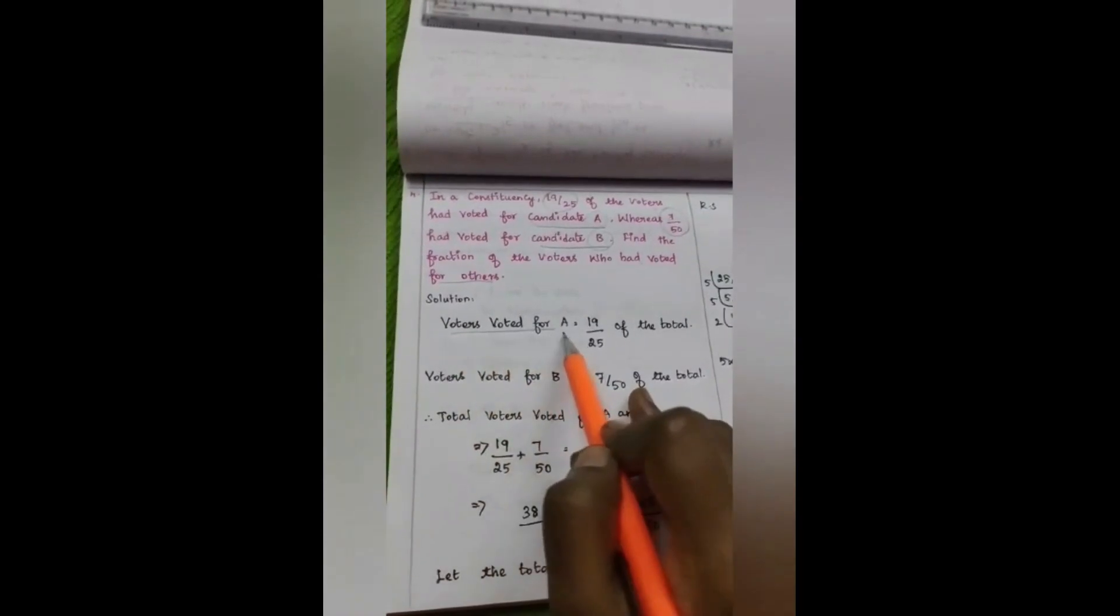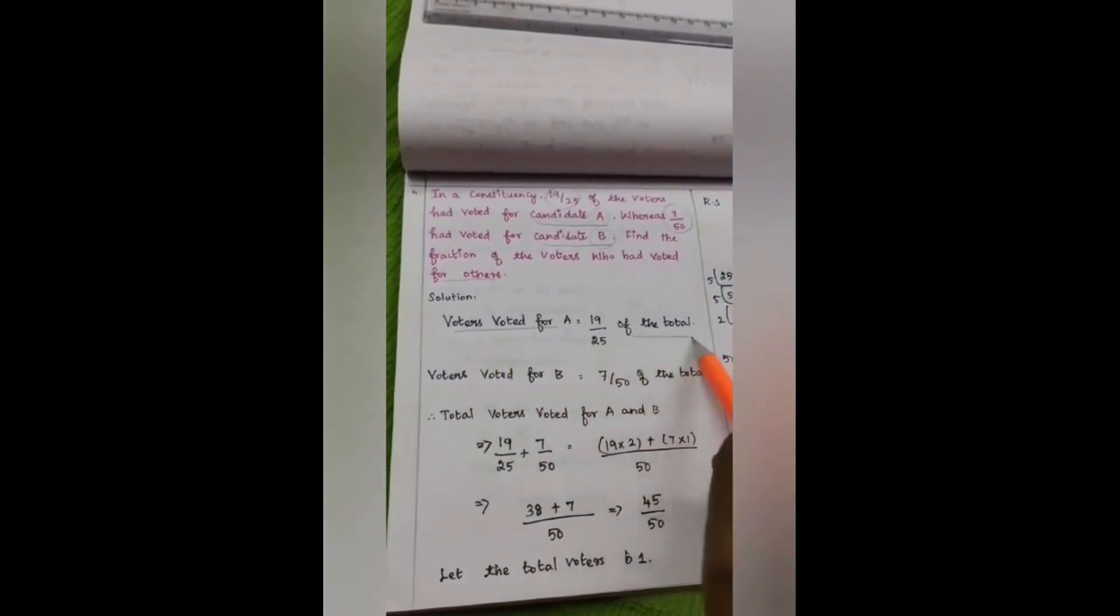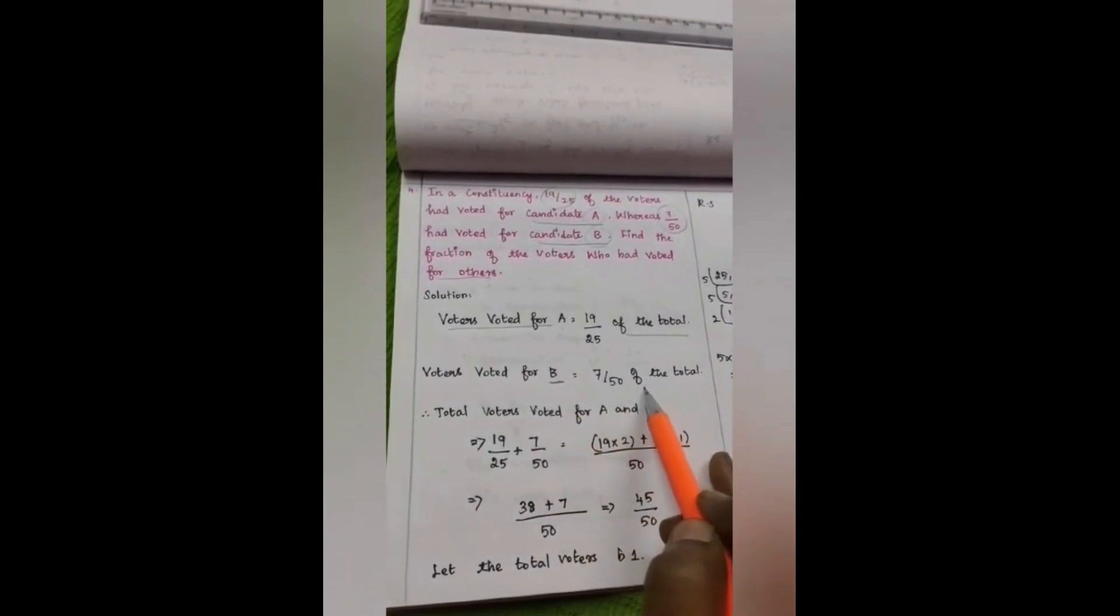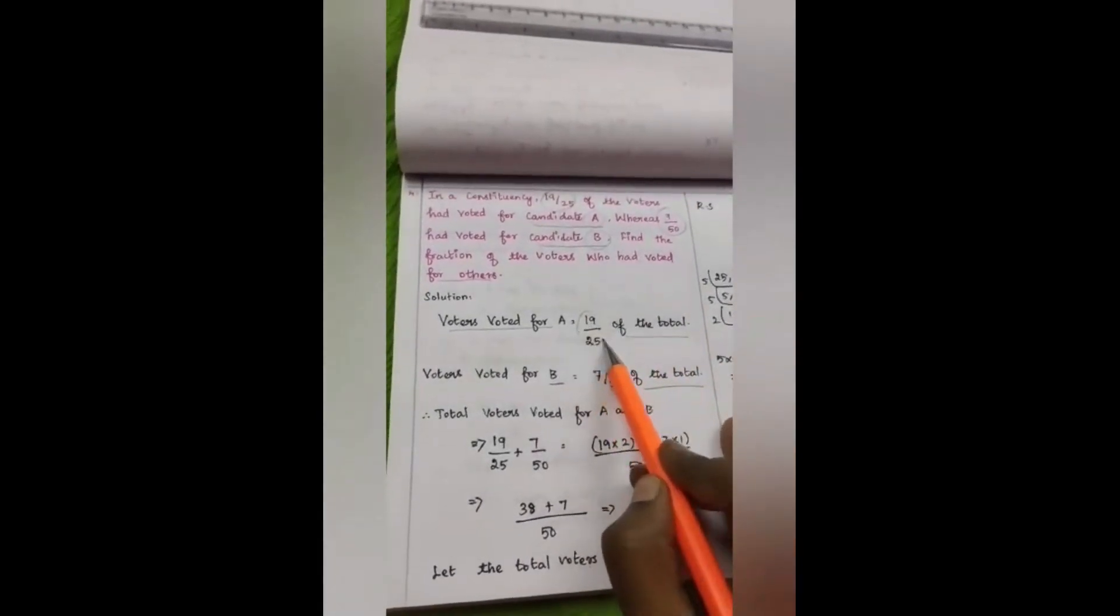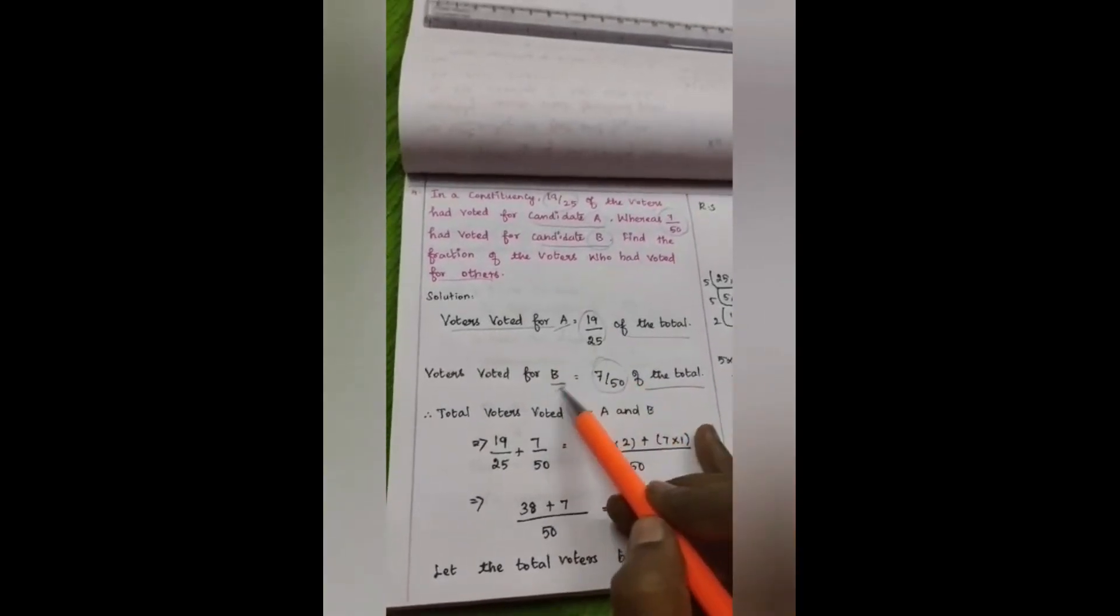Voters voted for candidate A, how much? 19 by 25 of the total. Voters voted for candidate B: 7 by 50 of the total. Among the total members, this much of vote has been recorded for A, this much of vote has been recorded for candidate B. Therefore, total voters voted for A and B.